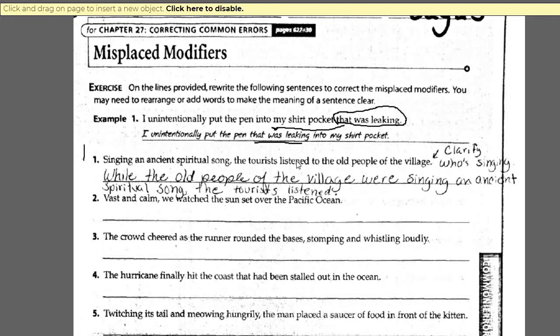From common sense, we know it's the old people of the village singing an ancient spiritual song. So we need to fix and clarify it. One way to fix it: 'While the old people of the village were singing an ancient spiritual song, the tourists listened.' There are, of course, multiple ways to deal with this. That version clarifies that yes, the tourists are listening, and yes, the old people are the ones singing.